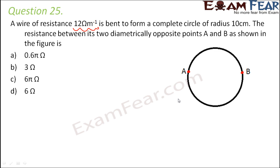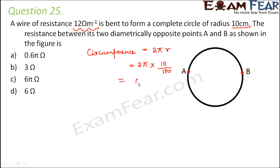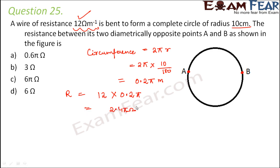In order to find the total resistance, we need the total length of the circle, which is its circumference. Circumference is given by 2πr, so it is 2π into r, where r is 10 centimeters, which equals 10/100 meters, giving 0.2π meters. Therefore, the resistance of the entire circle equals 12 (resistance per unit length) multiplied by 0.2π, which comes out to be 2.4π ohms.